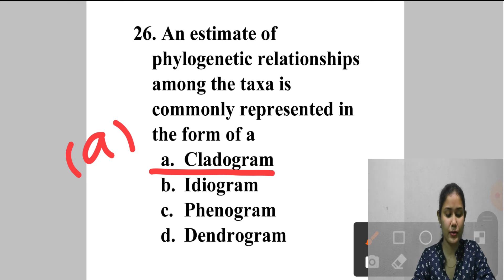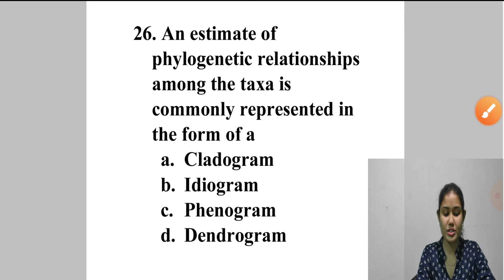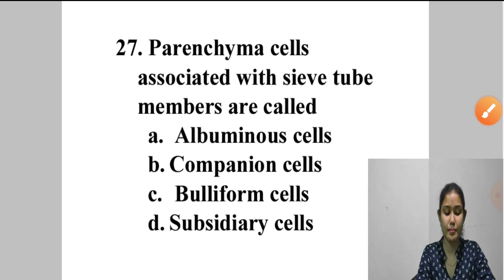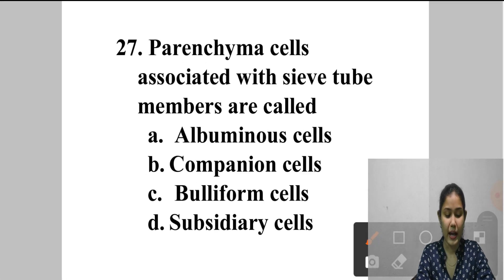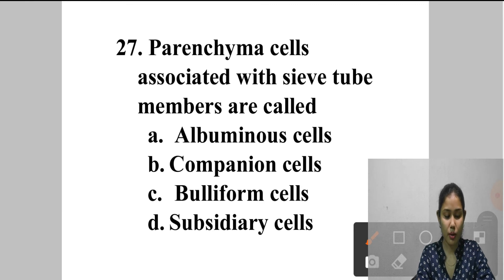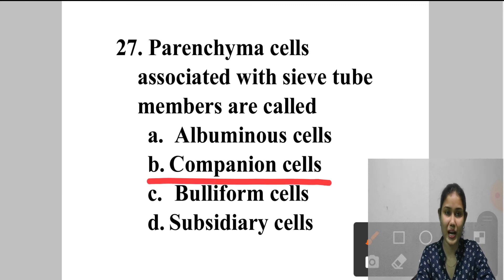Question 27: Parenchyma cells associated with sieve tube members are called — A. Albuminous cells, B. Companion cells, C. Bulliform cells, D. Subsidiary cells. The answer is option B — companion cells. These cells regulate the flow of nutrients through the sieve tube.